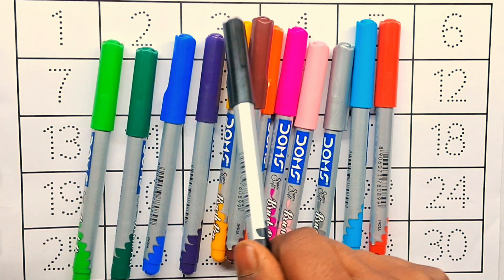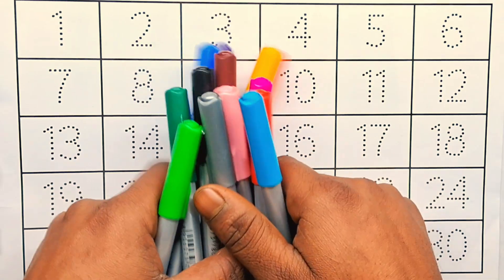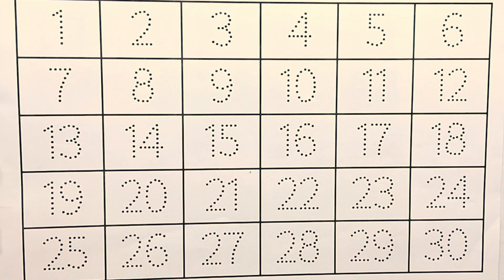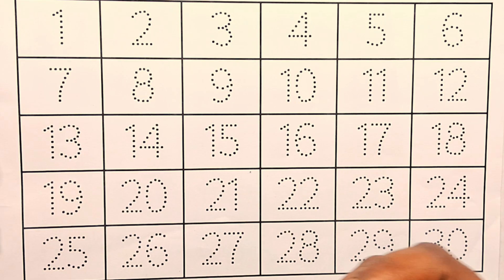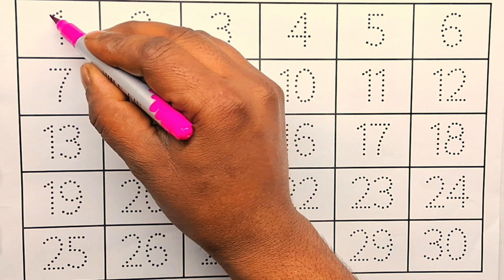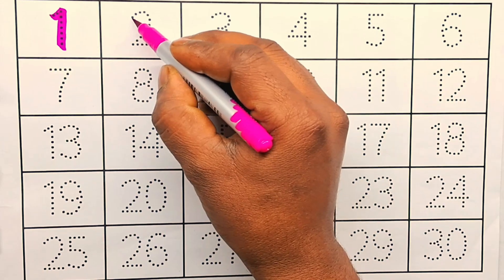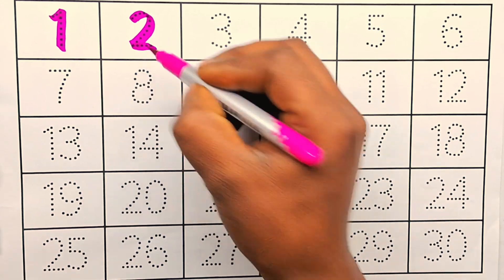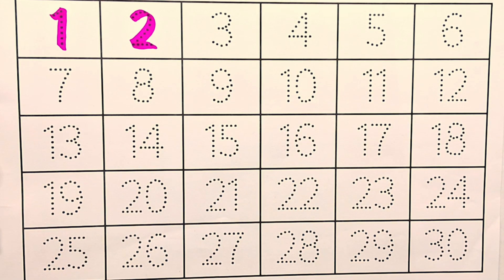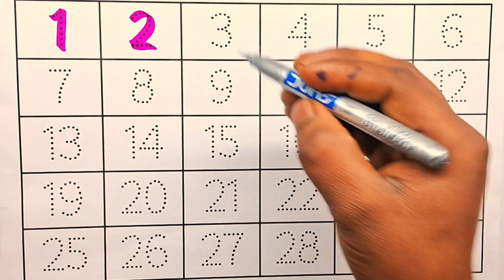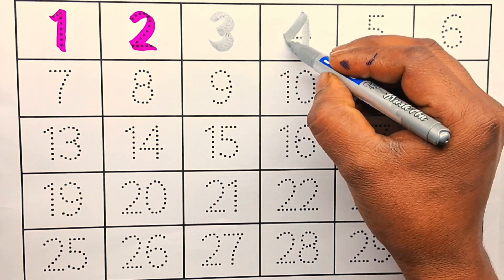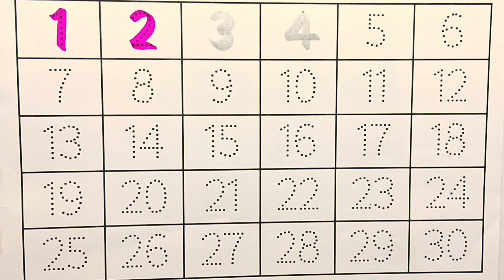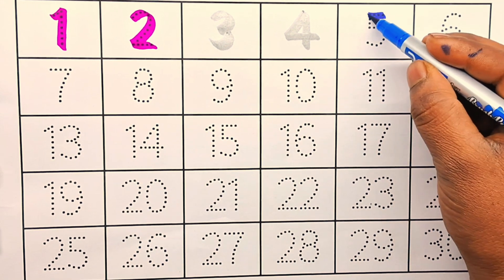And black color. Now kids, let's start counting numbers. One, one, two, two, three, three, four, four, five, five.